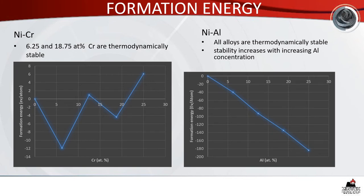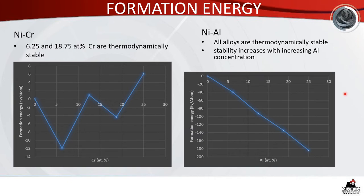Looking at the formation energies, for nickel-chrome alloys the stable alloys are at 6.25 and 18.75 atomic percent, whereas the rest showed positive formation energy. For nickel-aluminium alloys, all alloys are thermodynamically stable and stability increases with increasing aluminium concentration. The formation energy for nickel-aluminium alloys is more negative compared to nickel-chrome alloys, meaning that nickel-aluminium alloys are more thermodynamically stable.